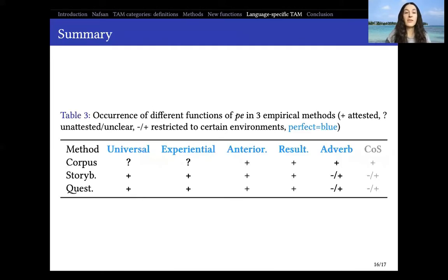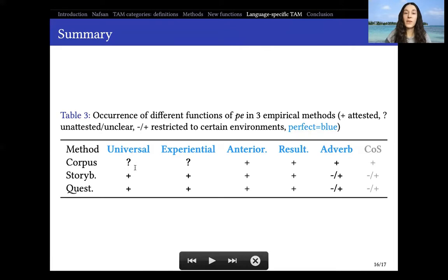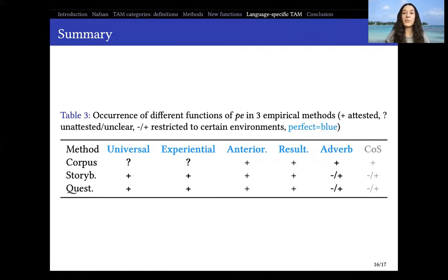We can summarize this and show that we confirmed what was unknown from the corpus data. We confirmed that Nafsan can indeed get the universal function and the experiential function; we already knew about the anteriority and resultative functions from the beginning. We also figured out through questionnaire and storyboard methodology that co-occurrence with adverbs is possible in Nafsan with the perfect, but only when the intended meaning is past perfect — just as is actually expected from perfect semantics.